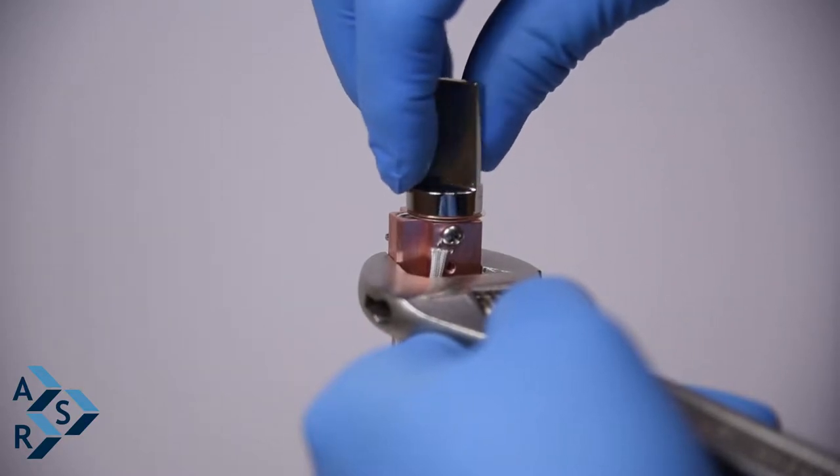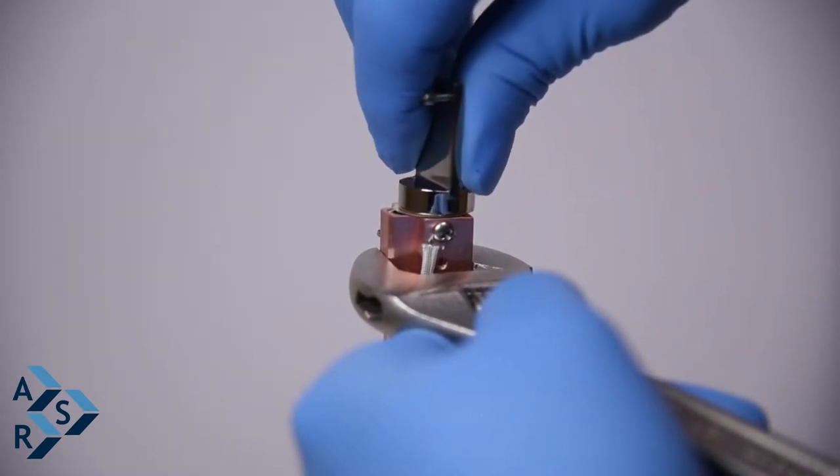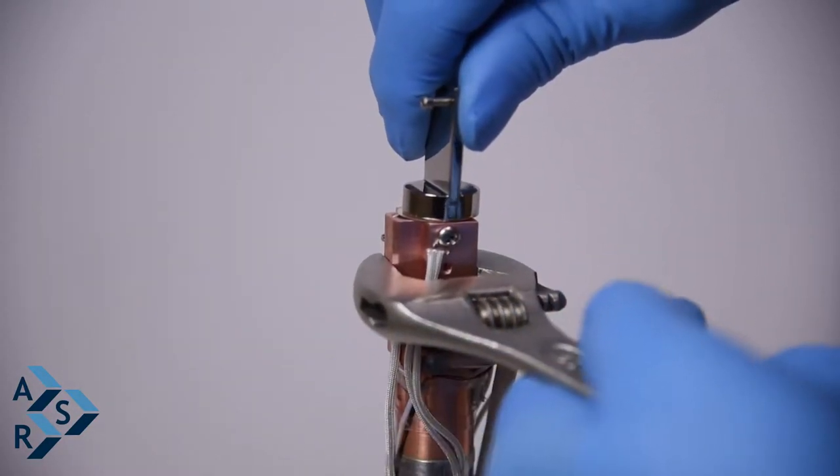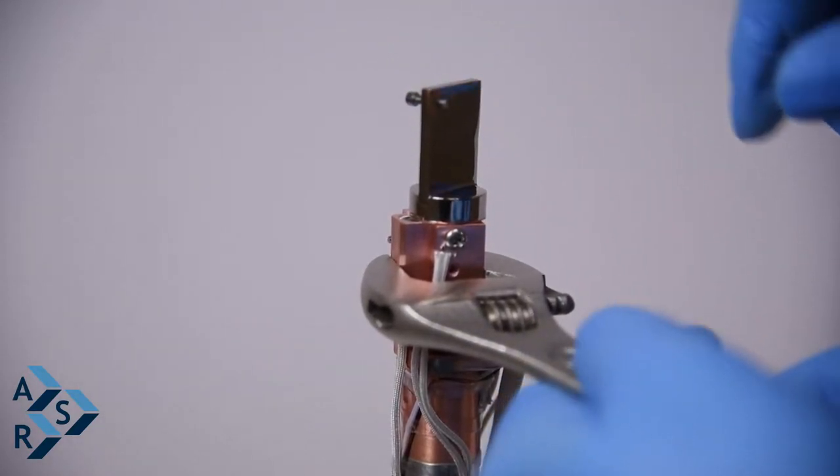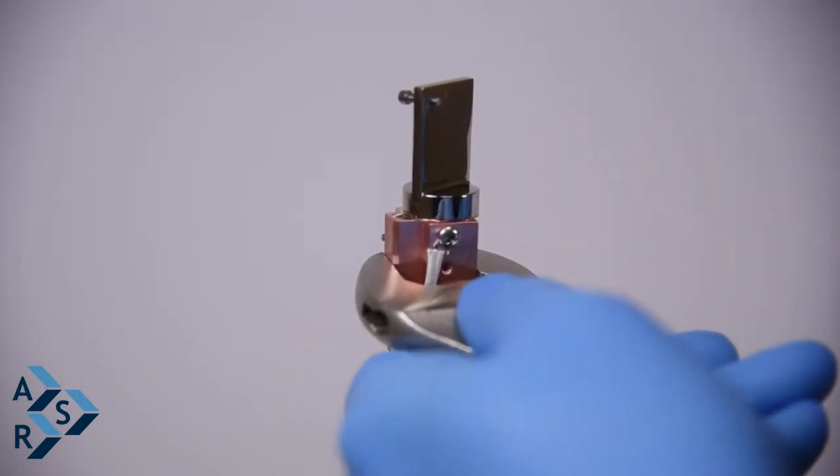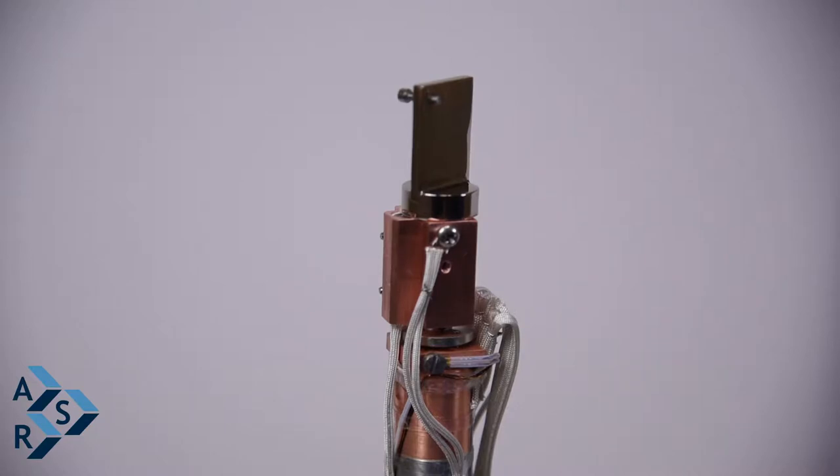And then when you tighten your sample holder, apply pressure. Tighten it tight so you make sure you get good contact between the interface and your sample holder, so you get a good temperature. And that's it.